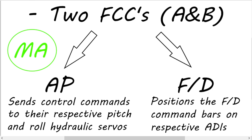We have two flight control computers in the Boeing 737, A and B, and the one that is commanding the autopilot is determined by the master light above the flight directors. If the autopilot is engaged in command A, FCC A is going to command the autopilot, and if it's engaged in command B, FCC B is going to command the autopilot.